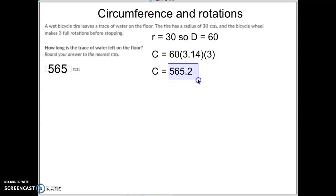And so we're going to take this number, round it to the nearest centimeter. 0.2 makes this one closer to 565 than it does to 566. So we would record the answer of 565. Beautiful. Done. Next one.